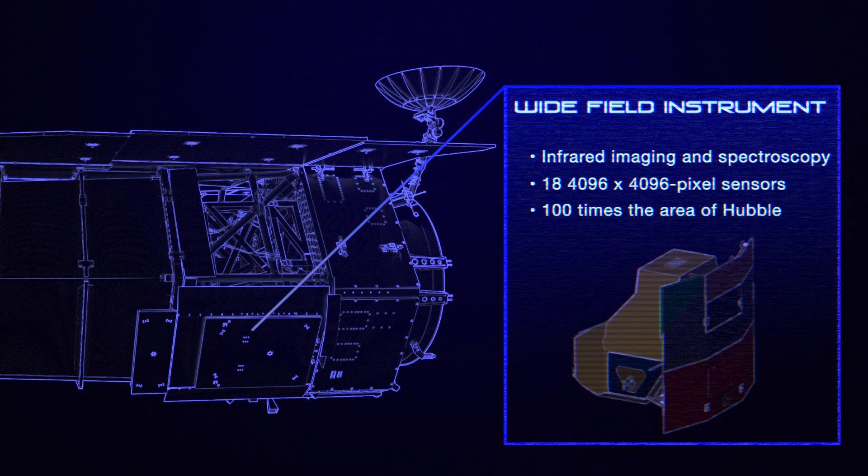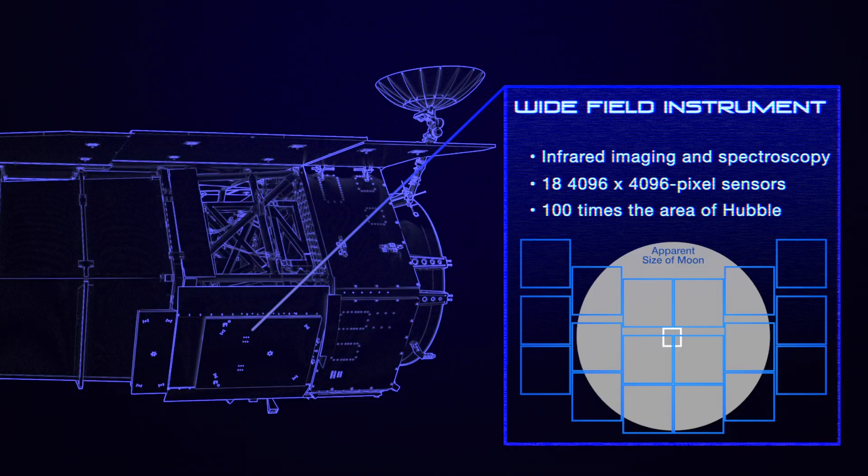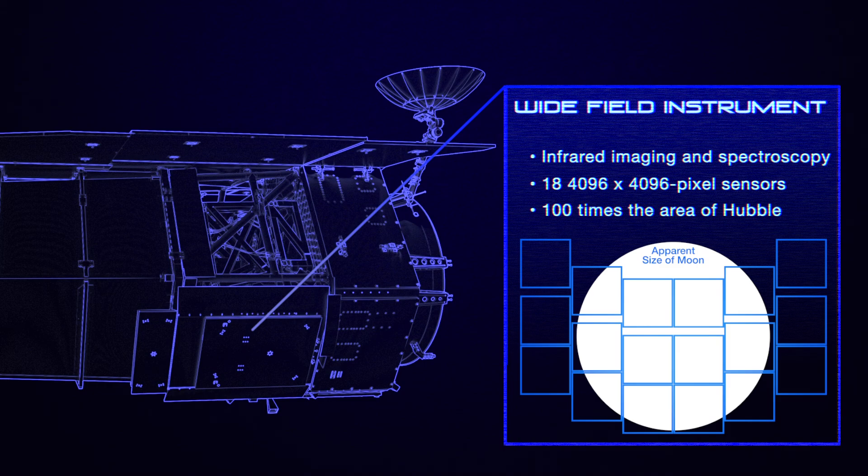Instead of Hubble's single first-generation image sensor, the WFI incorporates 18 third-generation chips that allow it to take pictures capturing 100 times greater sky area than Hubble's. Each 300-megapixel image will enable scientists to study a large portion of the sky.